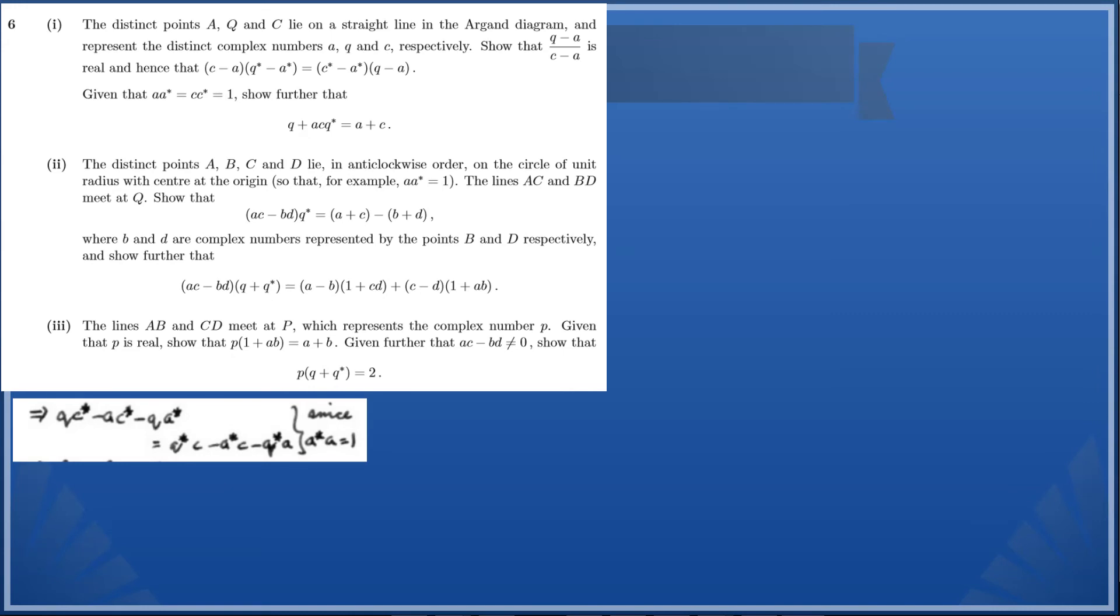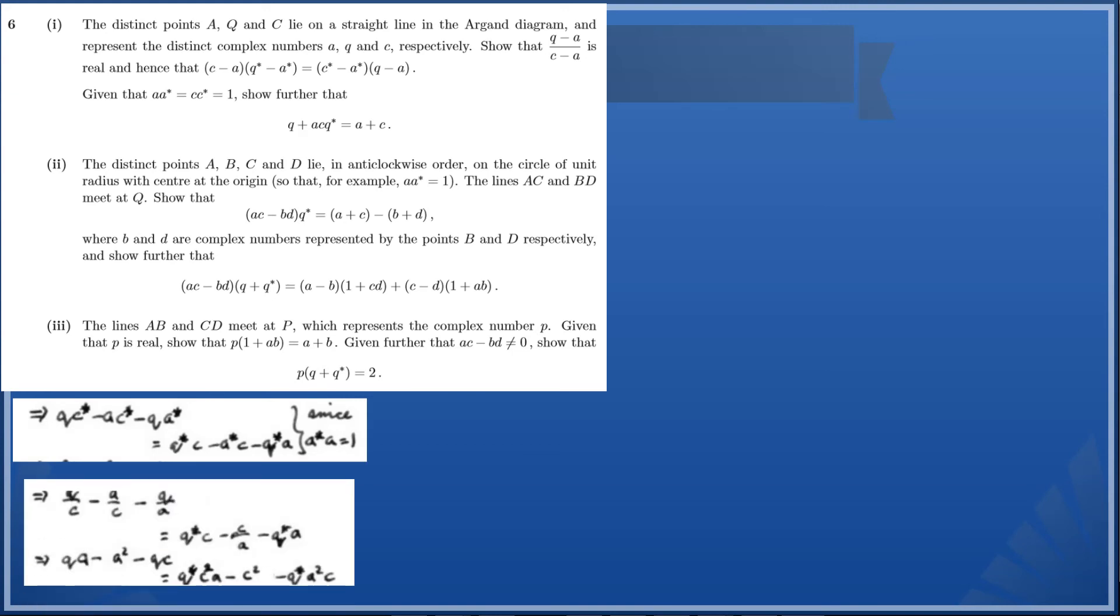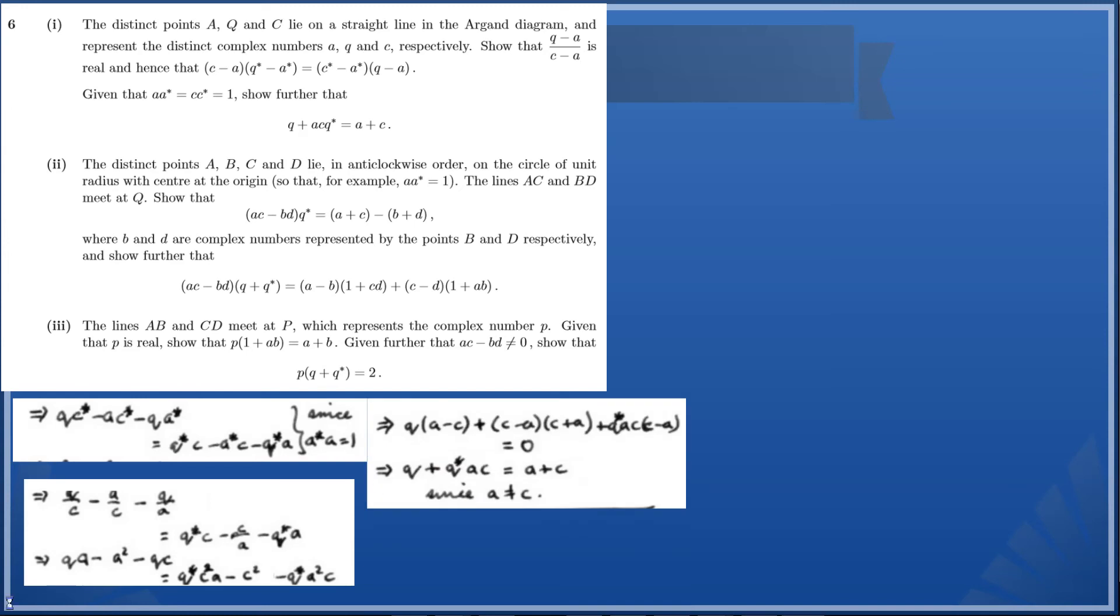We're also going to use our result, using the fact that aa* = 1, and we may need to consider cc* = 1 as well. Now what we can do is divide through by c on both sides of the equation. Then it very quickly follows that q + q*ac = a + c, and we know that to be true because a ≠ c.